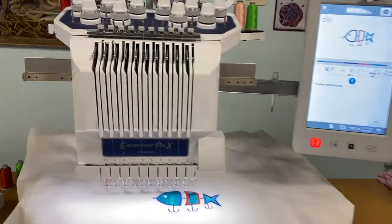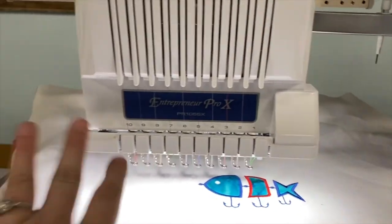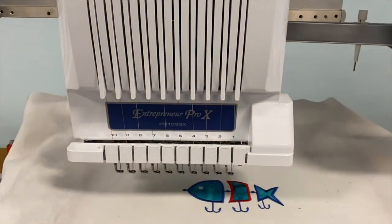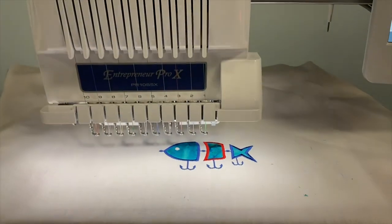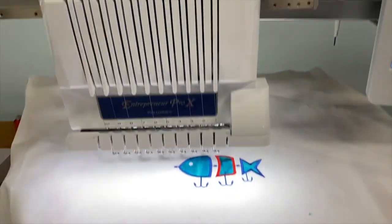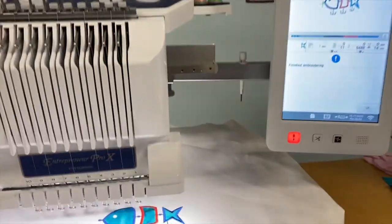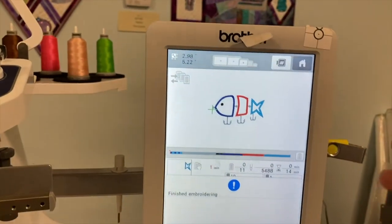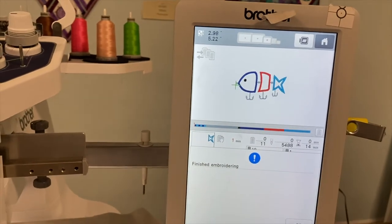All right, so it's finished. What's awesome about this machine and the new features - we're using the Brother PR1055X, if you haven't noticed or we didn't tell you - it flashes whenever it's done. If you have a thread break and something breaks, it'll also flash and it'll actually pop up on here and tell you which one's broken.